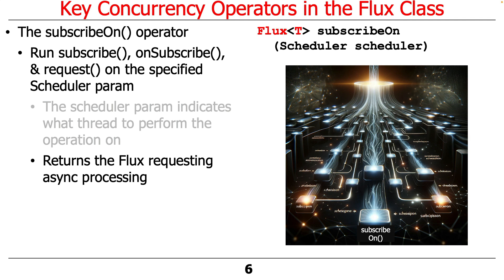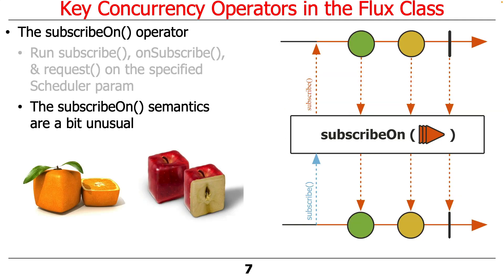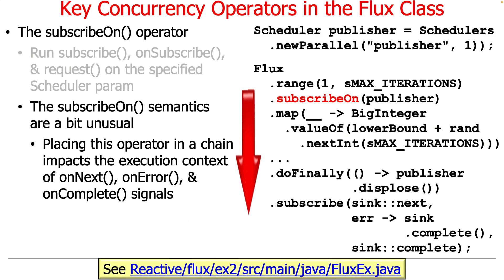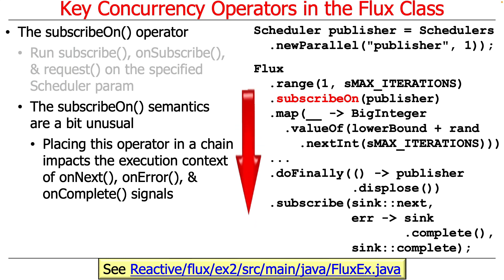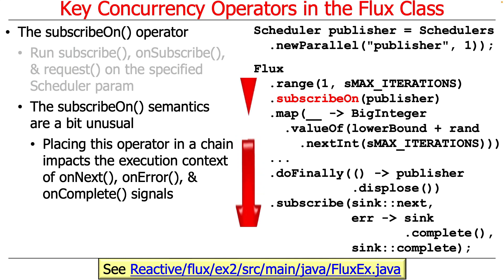What comes back from subscribeOn is a flux whose data will be processed by subsequent operators in the designated scheduler context, which could be a single thread or a pool of threads. The semantics of subscribeOn are a little bit unusual because when you place the subscribeOn operator in a chain of methods that are part of a flux pipeline, it will impact the execution context of subsequent onNext, onError, and onComplete signals.